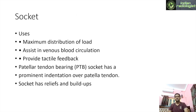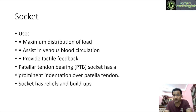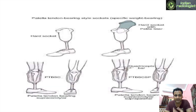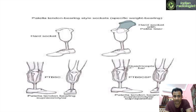The socket helps in maximum distribution of load, venous blood circulation, and provides tactile feedback — which is important for the individual to properly assess the position of the artificial limb and modulate actions accordingly. The patellar tendon bearing socket has a prominent indentation over the patellar tendon. As seen in these images, there is a hard socket and a hard socket with a pelite liner. The patellar tendon bearing socket is used for the lower limb — specifically the knee joint — and can be supracondylar as well as suprapatellar in nature.